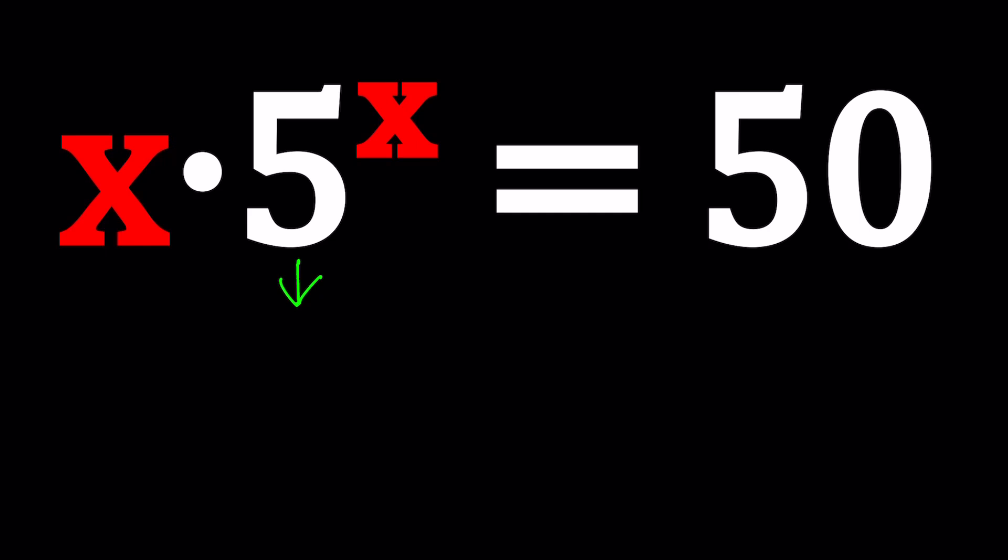How can you do that? You can use a well-known identity, which is e to the power ln something. Anything, let's just call that A, is equal to A. So e to the power ln anything is anything. So we can basically say then that e to the power ln 5 is equal to 5.